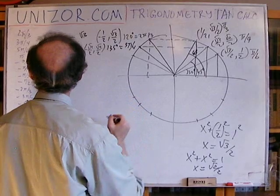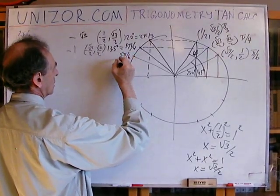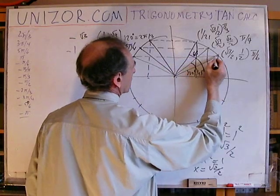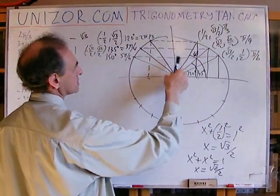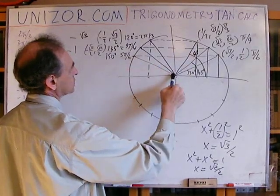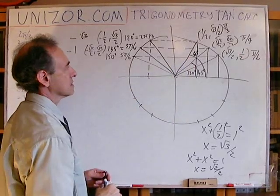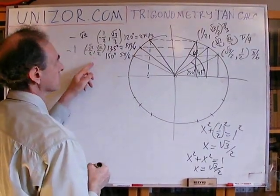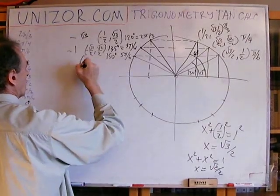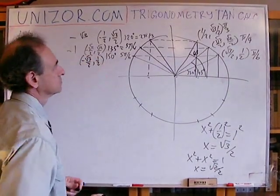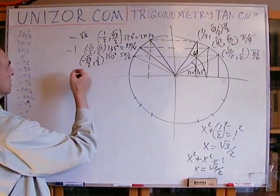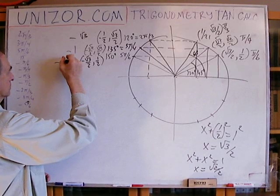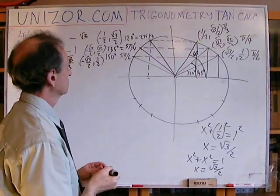Next is 5π/6, which is 150 degrees. The obvious symmetry is with 30°, because 30° = 90° − 60° and 150° = 90° + 60°, so the angles are symmetrical relative to the y-axis. The coordinates of this point are (−√3/2, 1/2). So the tangent is −1/√3, which is the same as −√3/3.